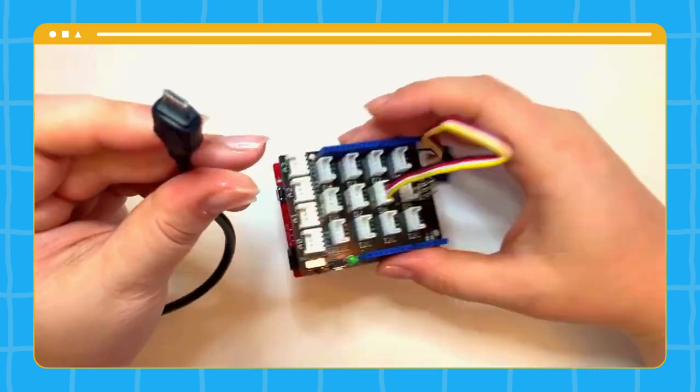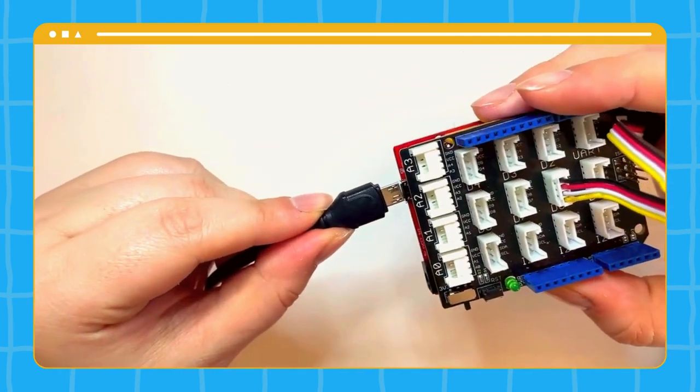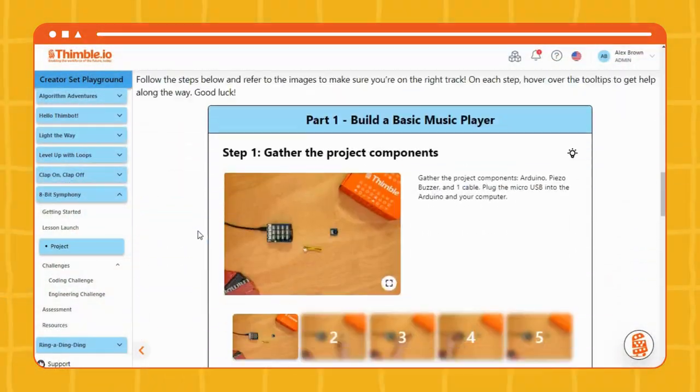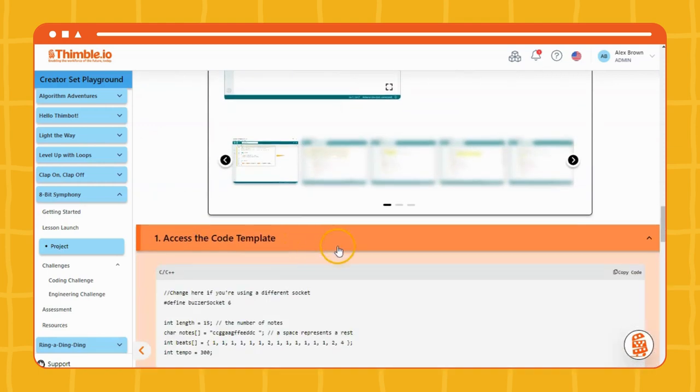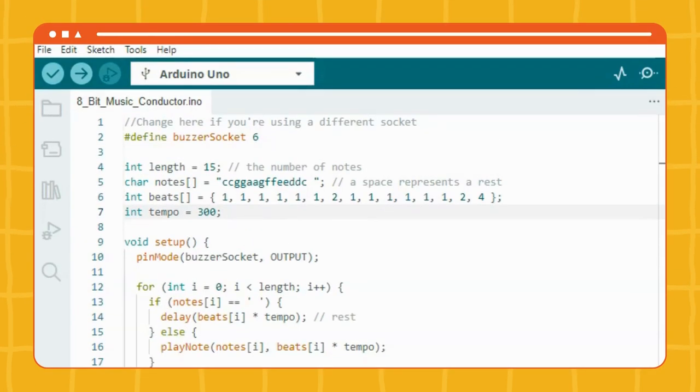Now let's get coding! Let's take the project's code from the Thimble.io learning platform and drop it into the Arduino IDE. Click upload and listen for the tune.